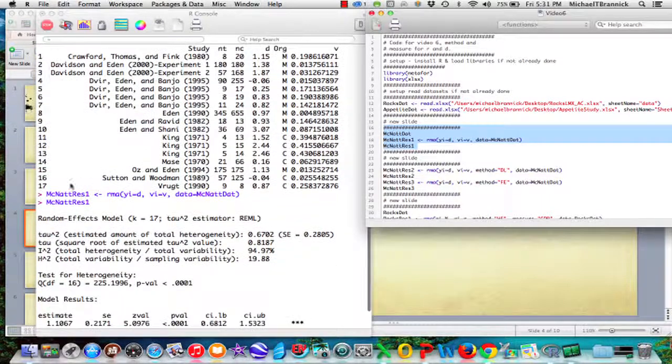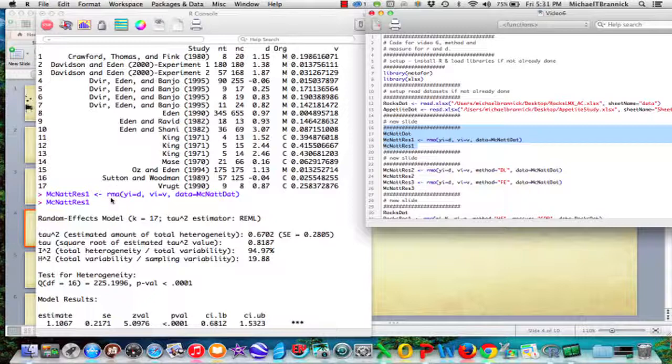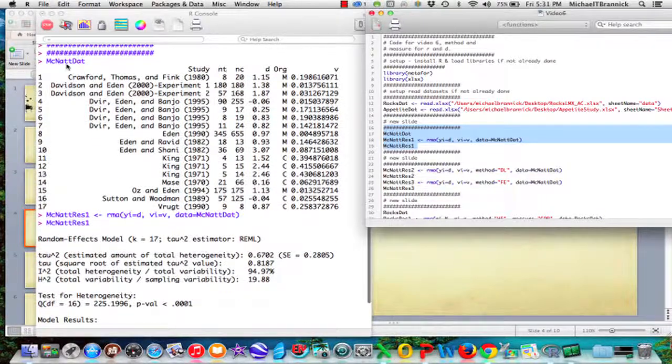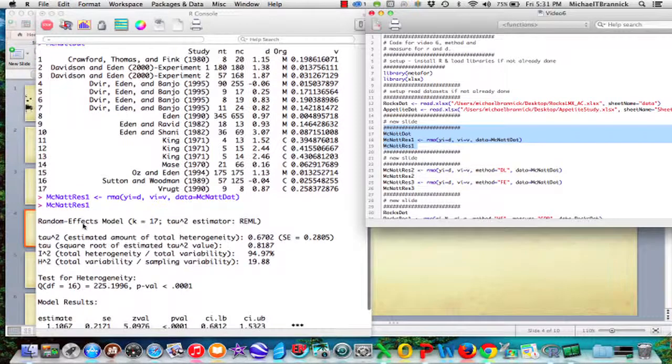To run the analysis, I say here's my output. McNatt results one gets RMA. So RMA is the Metafor program. Y sub i equals D. So this is my generic effect size, and I find it in D. V sub i, my generic variance, I find in V. And the data is McNatt dat, which is this little guy here. Okay, and it runs, and then I say I want you to print McNatt results.